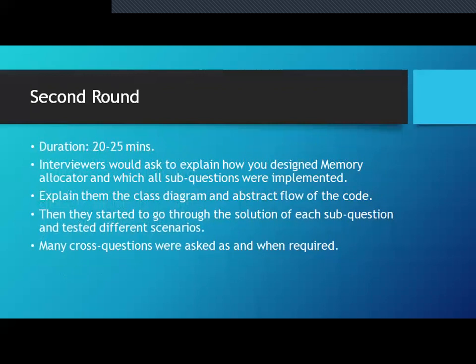Round 2 is 20 to 25 minutes. The interviewers will review your code and ask you to explain in detail why you chose this memory allocator design. All sub-questions on your code implementation will be asked — the class architecture, the abstract flow, why you used a specific method or class. You also need to demonstrate that your unit test cases provide maximum code coverage.